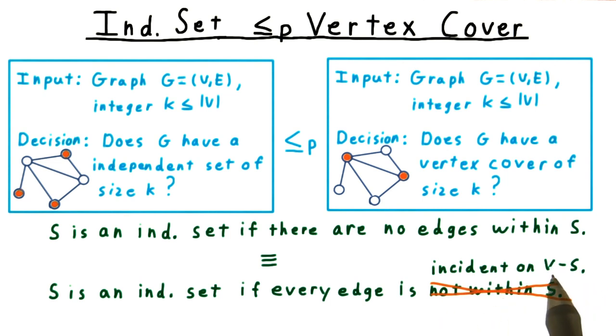Aha, but that just says that V minus S is a vertex cover. So, of course, the complement of an independent set was always a vertex cover, and vice versa.